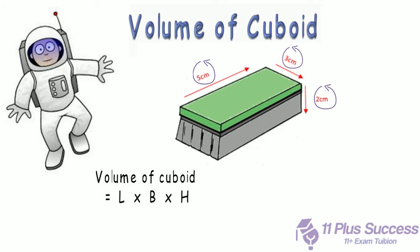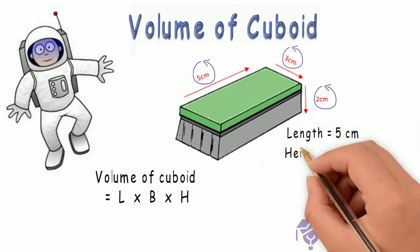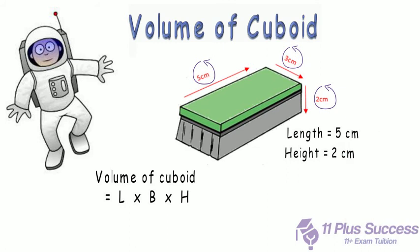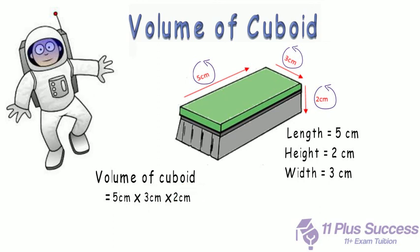The measurements of all sides of the duster are as follows: Length equals 5cm, Height equals 2cm, Width equals 3cm. Let's put the values in the formula. Volume of Cuboid equals 5cm times 2cm times 3cm.